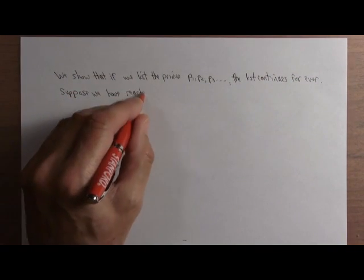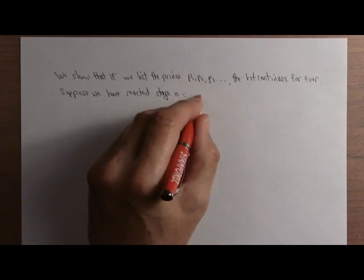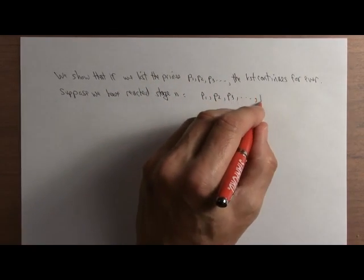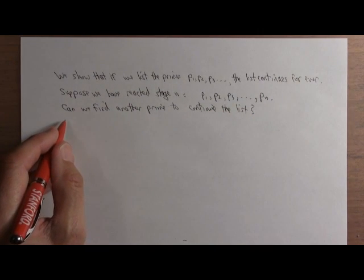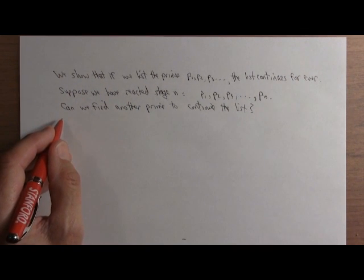Suppose we've reached some stage n, so we've listed p1, p2, p3, up to pn. Can we find another prime to continue the list? If we can always find another prime, then the list goes on forever, and we've shown that there are infinitely many primes.